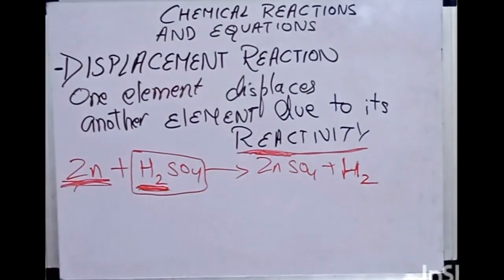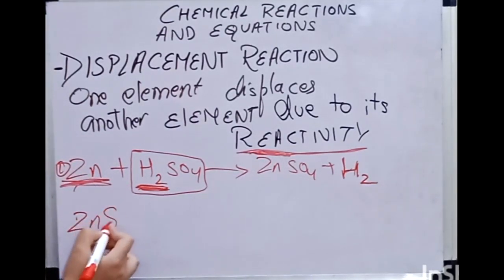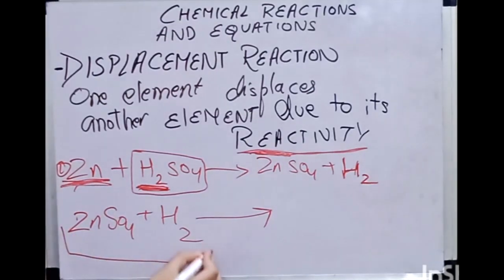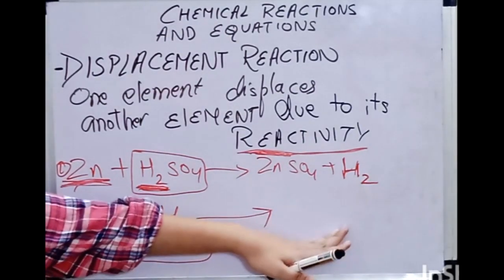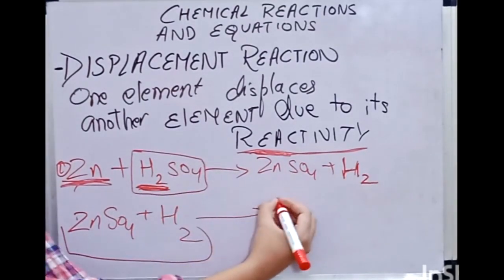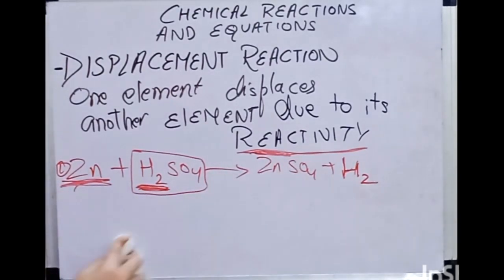Now consider the reverse: ZnSO4 + H2. What will happen here? Think about it. The answer is — nothing. ZnSO4 + H2 will remain the same because H2 cannot displace zinc from ZnSO4 since hydrogen is less reactive than zinc. No reaction can occur.